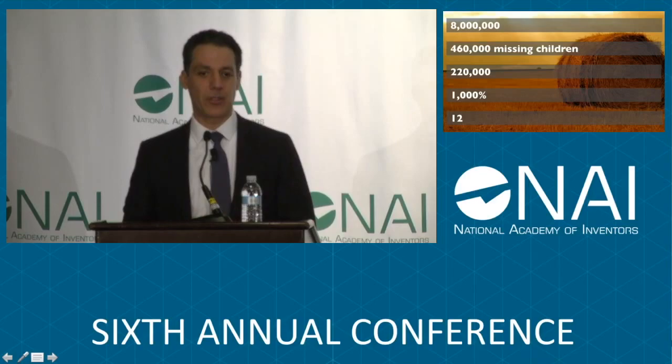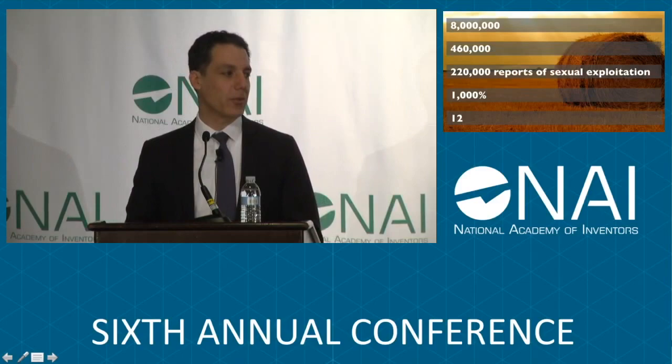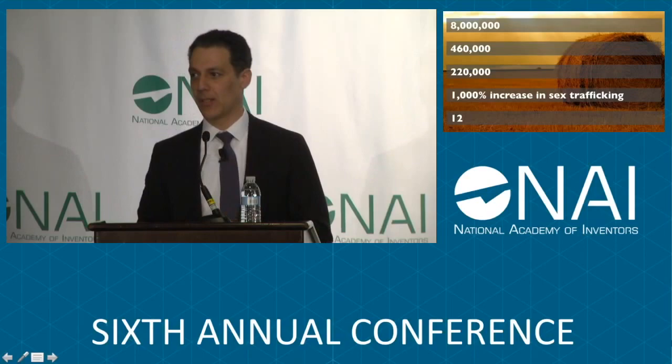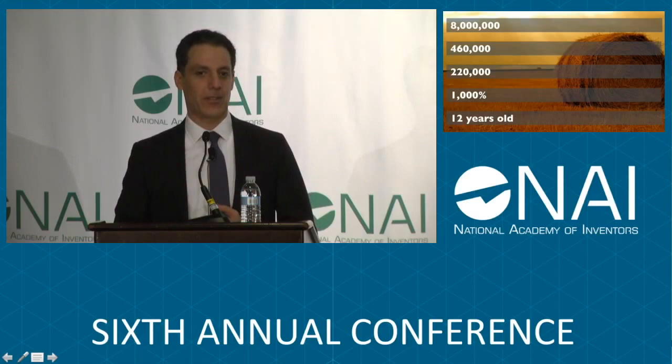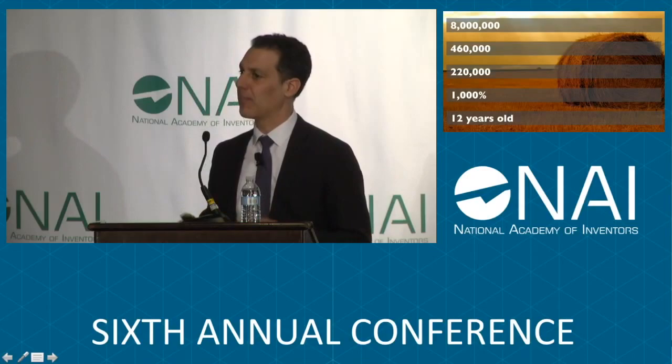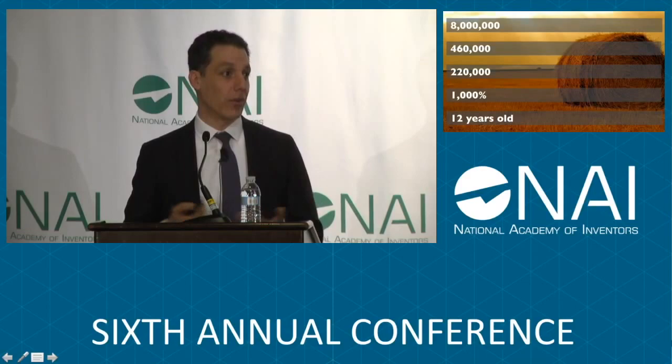They also report, in this country alone, 460,000 missing children, 220,000 reports of sexual exploitation of young children, and over the last five years we've seen a 1,000% increase in sex trafficking alone. The average age of a child involved in sex trafficking and child pornography is 12 years of age. These numbers reflect only U.S.-based data — about 5% of the world's population — so scaled up by a factor of 20 or more, you get a sense of the harm being done to children worldwide.